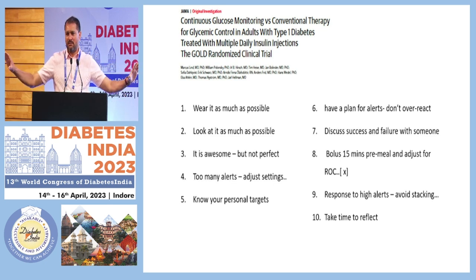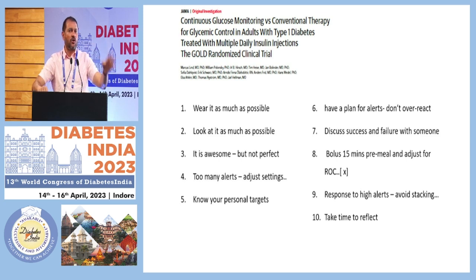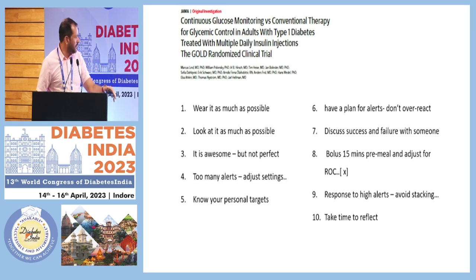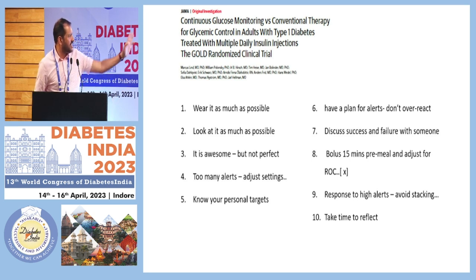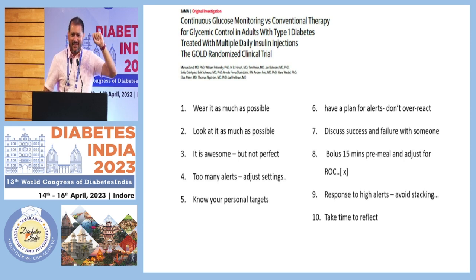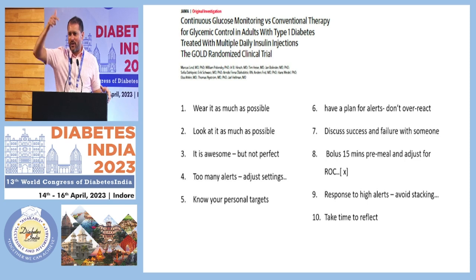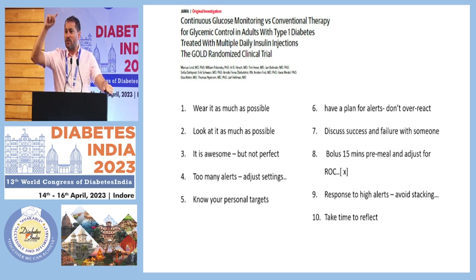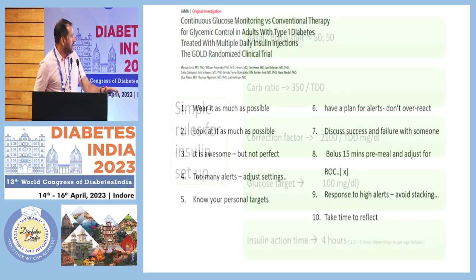For people with type 1 diabetes, it's a long game. A single reading of 300 or 40 is not going to make any long-term difference — what matters is the average over the next 10 years. Adjust your alert settings and have a plan. Don't overreact: when people first start using CGM, they see something dropping and overreact, go high, see the high, overreact, bring it low. Sometimes looking at it too much causes more fluctuation and worse control.